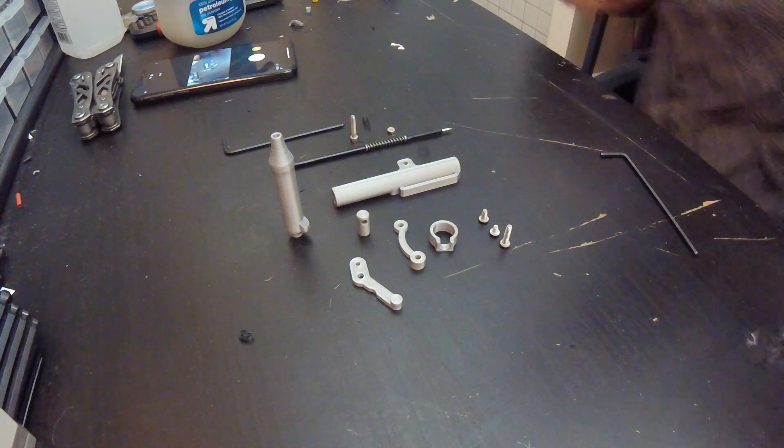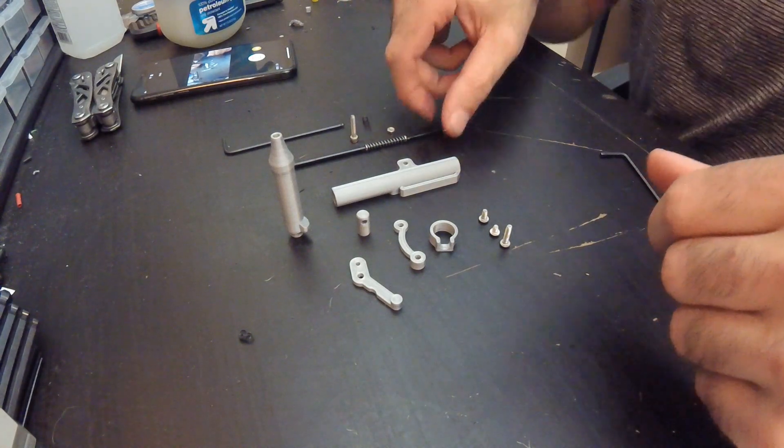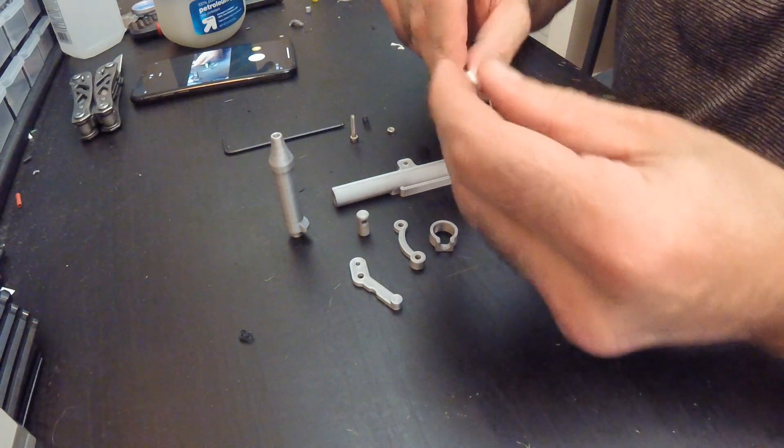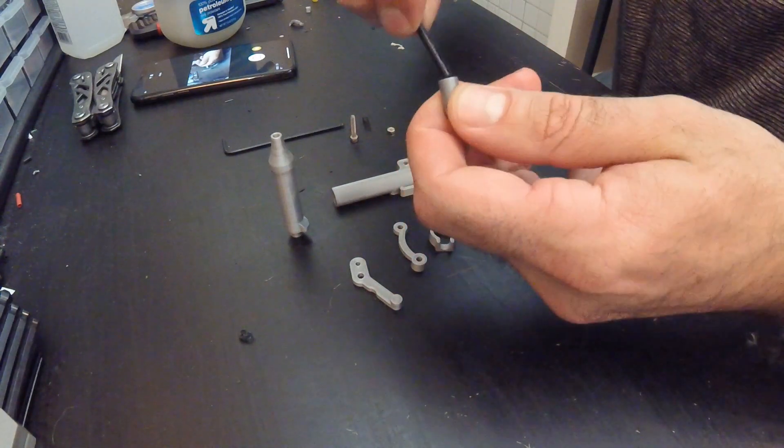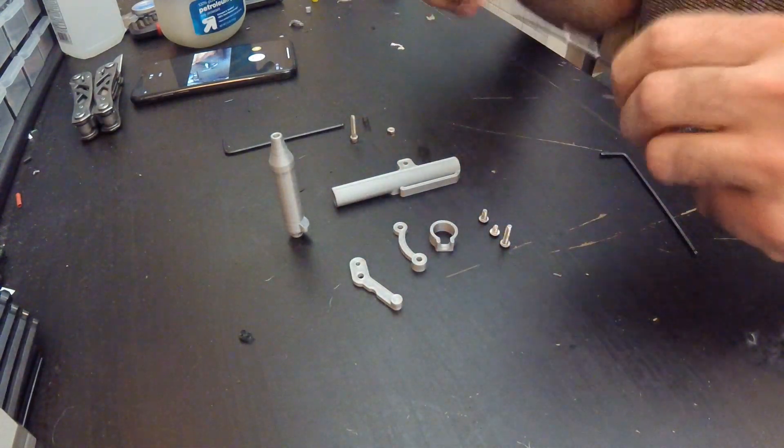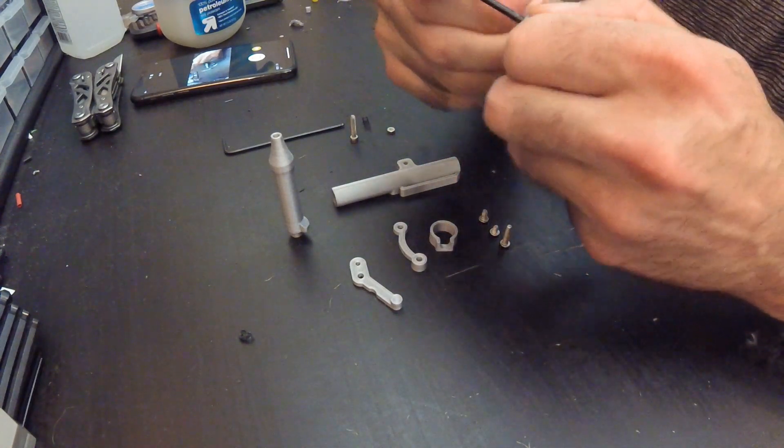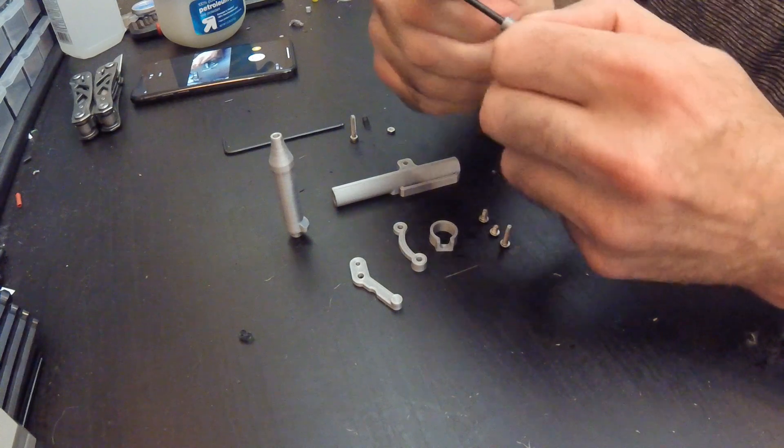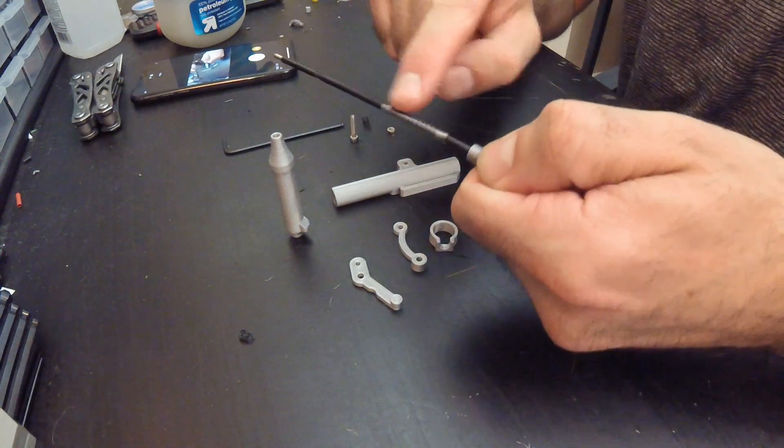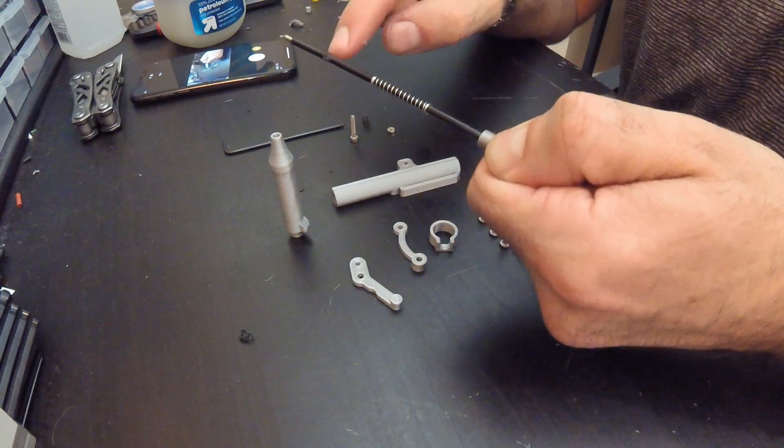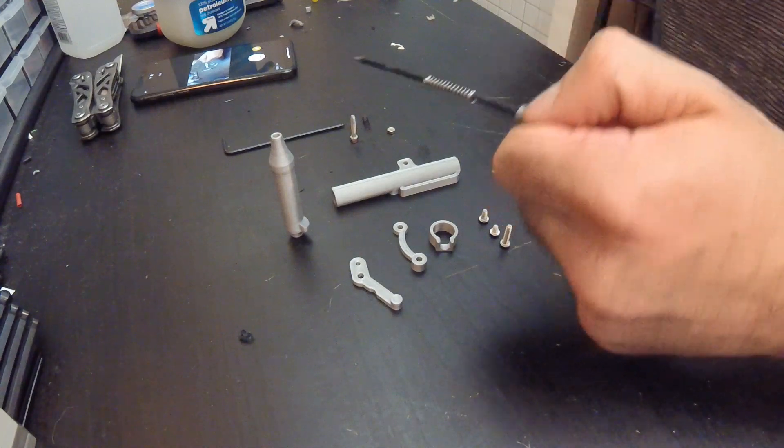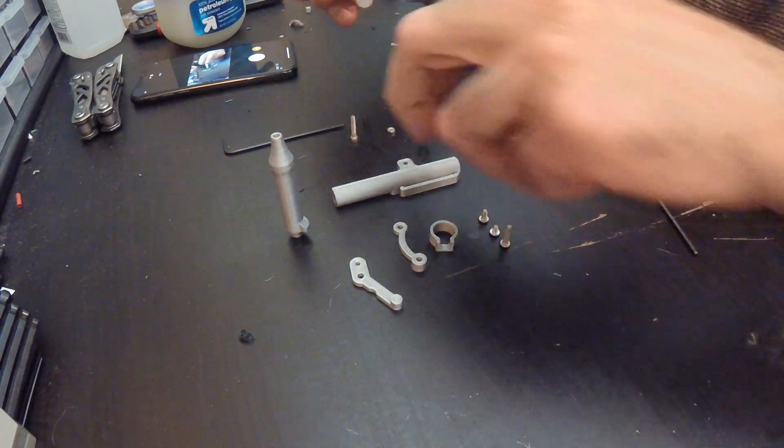So to start, we build the pen part. We take the plunger and stick it on the insert. You can use any pen insert; they all work just fine as long as it's just your standard cheap one. The spring goes on top of that.